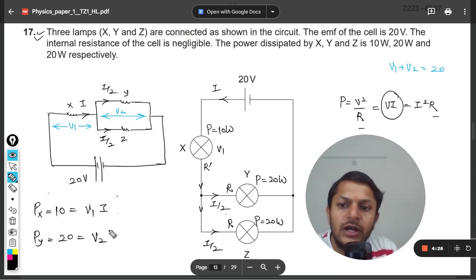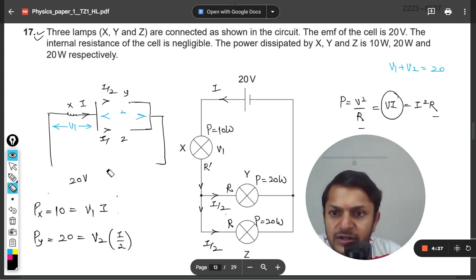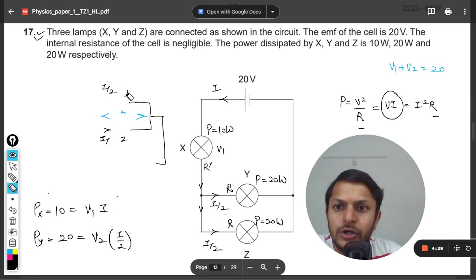Now we can cancel I and find the ratio of V₁ and V₂. So now I'm erasing this diagram here, that is of no use anymore, so I need space.